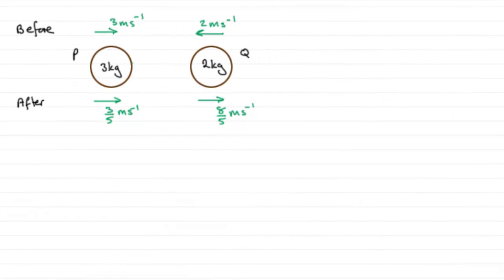Now in this last part, what we've got to do is find the impulse, the magnitude of the impulse exerted on P by Q in the collision. And what I've done is I've added the final velocities that we found in the first part of the question to the diagram.